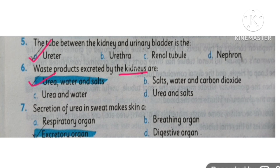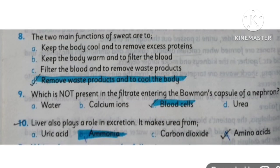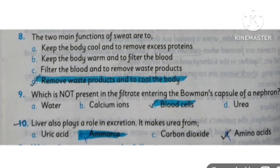The next MCQ: secretion of urea in sweat makes the skin an excretory organ, so here it functions as an excretory organ. The two main functions of sweat are to remove waste products and to cool the body.